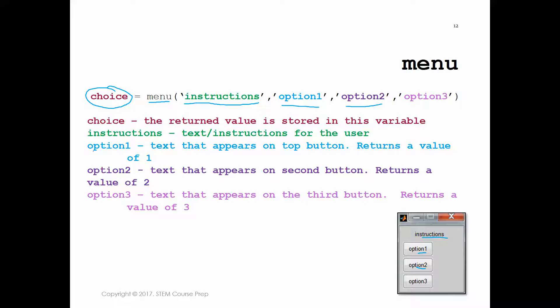So option one — that's the text on the top button. If they hit that option, it returns a value of 1. Option two: if the user hits that button, a value of 2 is returned. And if they hit the third button, a value of 3 is returned.